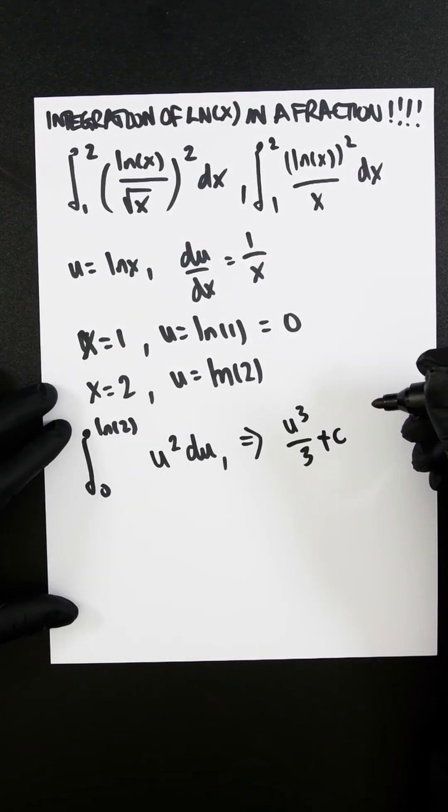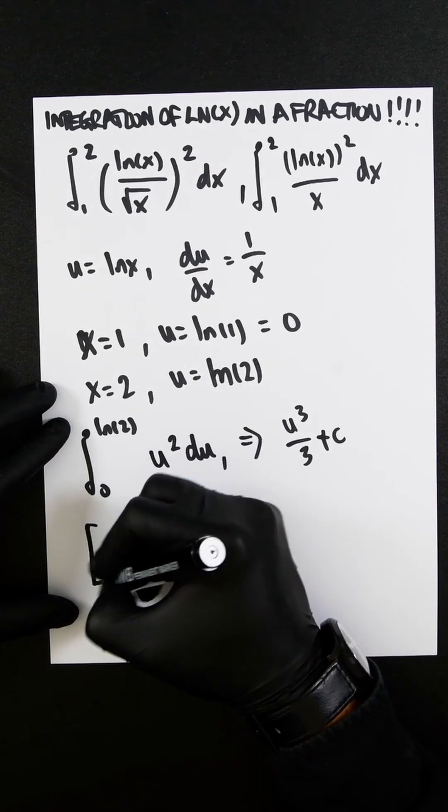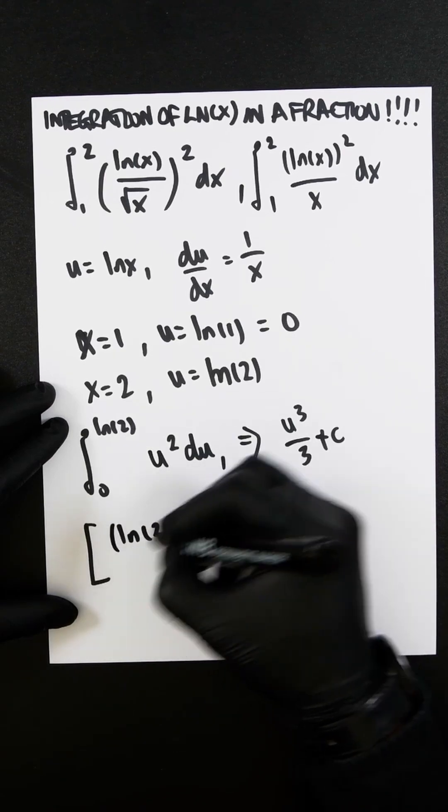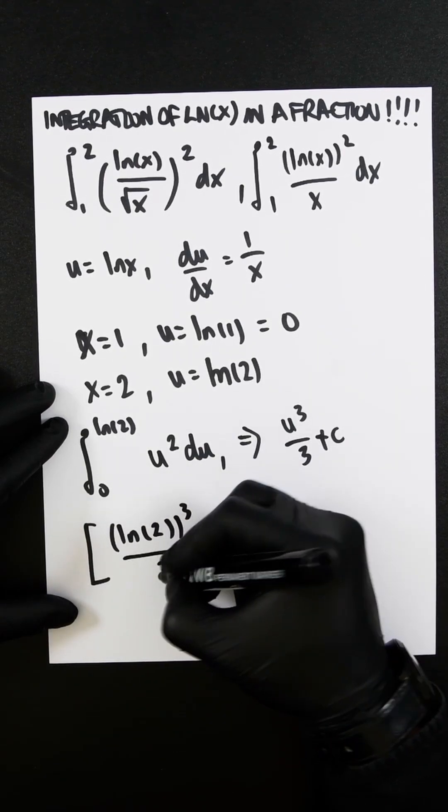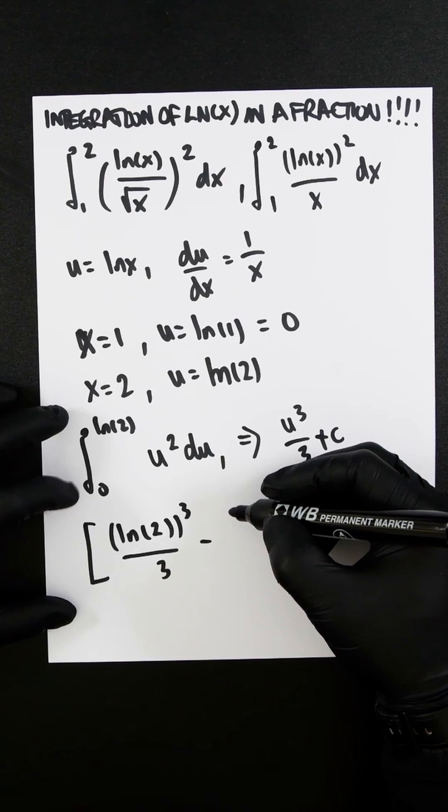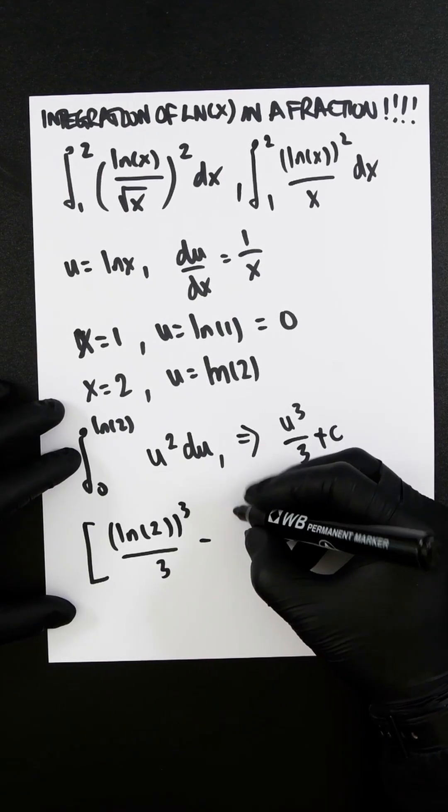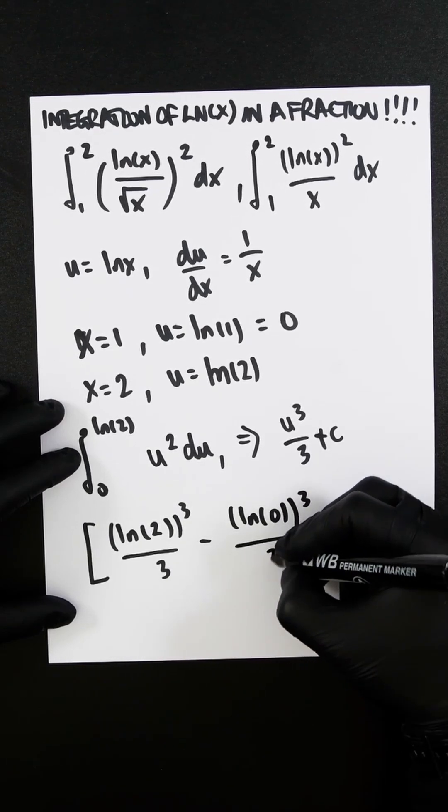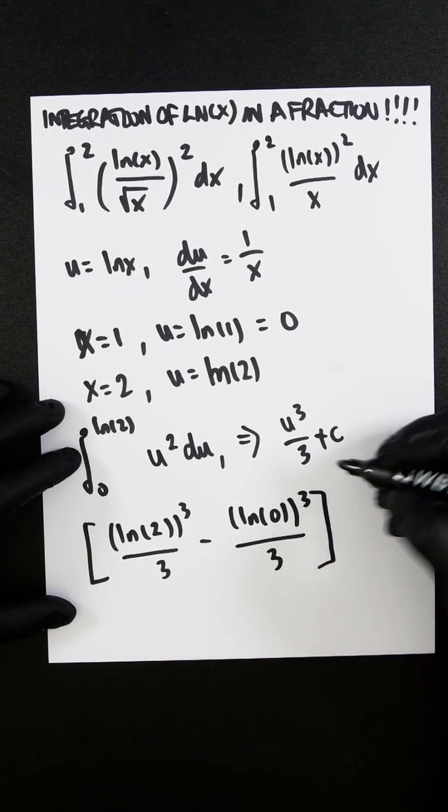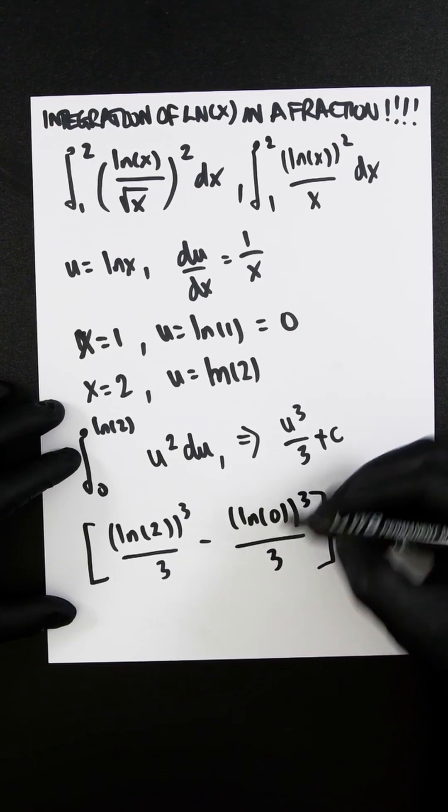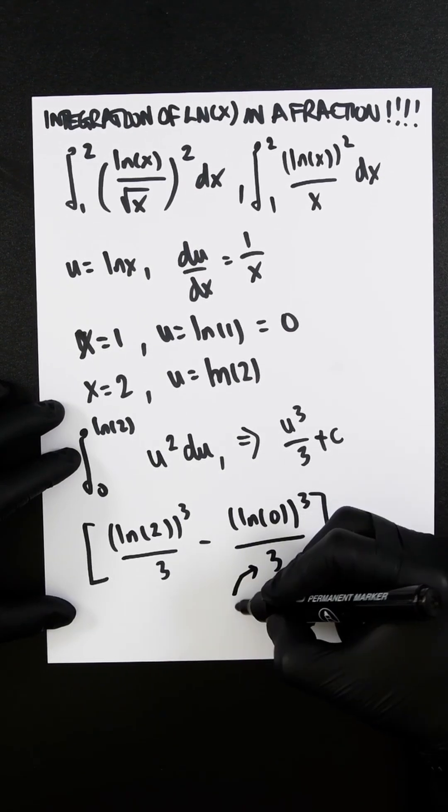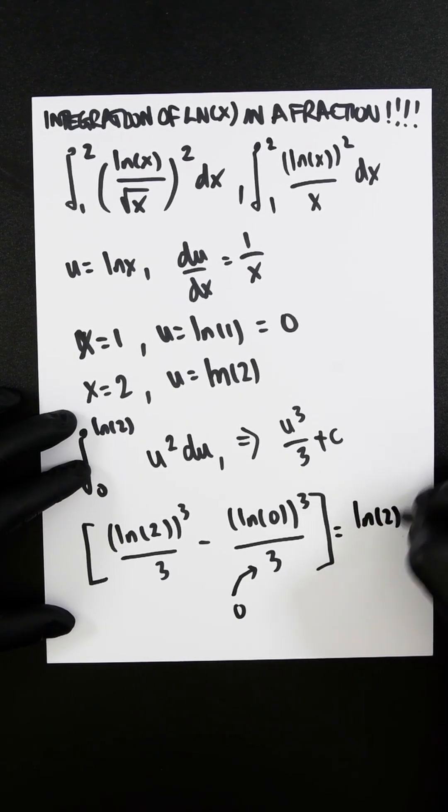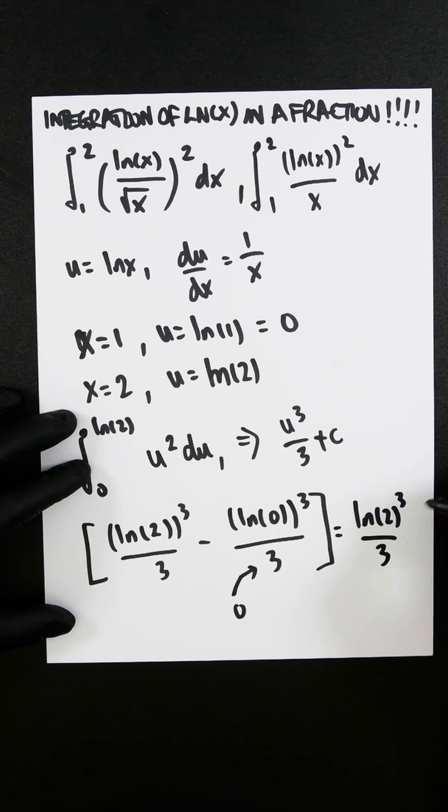And now finally, we plug in our parameters. So you're going to have ln 2 all cubed over 3 minus, that's the top parameter, minus the bottom one. So we're going to have ln 0 all cubed to 3. So this here goes to 0. So therefore, our complete answer is ln 2 cubed over 3.